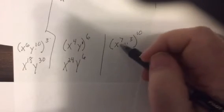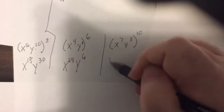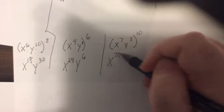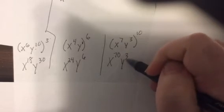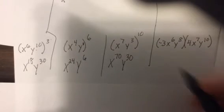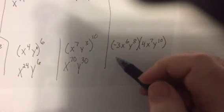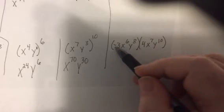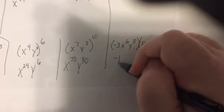I raised both to the tenth power, so it'd be X to the seventieth, good, Y to the thirtieth. You are so good at this. Now what do you do when you're multiplying things same base? Well you just, negative three times four is negative twelve.